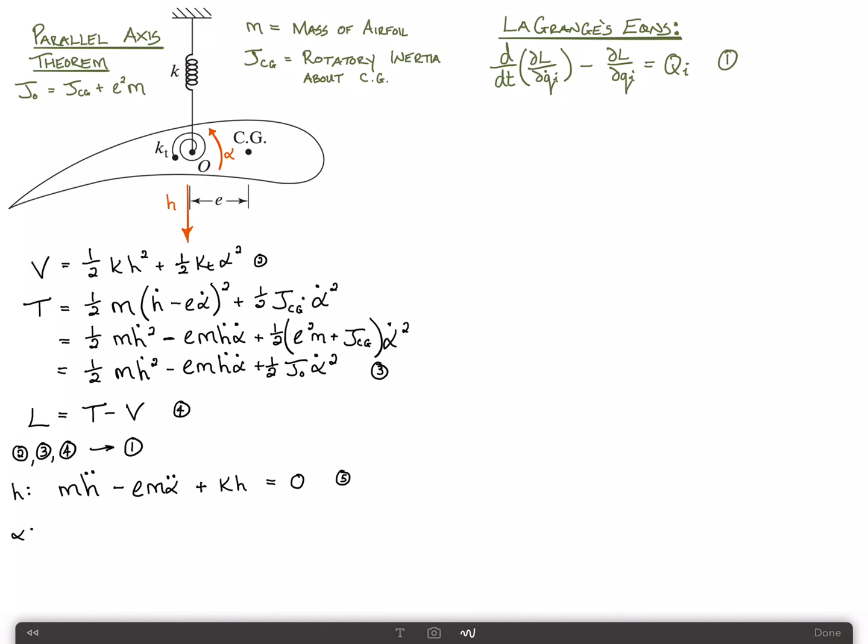And then the alpha equation of motion is minus, you're going to start off with this term. This would be e m h double dot. And then the contribution of this term is just j naught alpha double dot, plus k sub t alpha equals zero. Call that equation six.